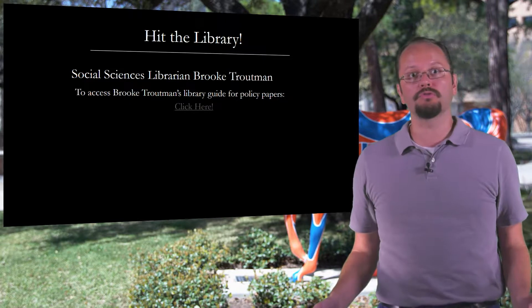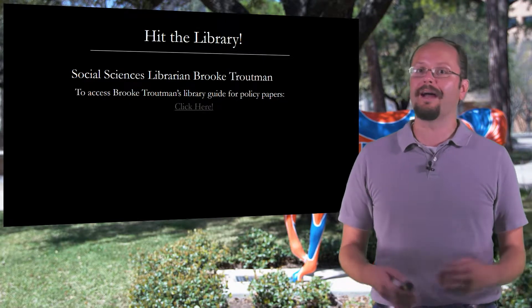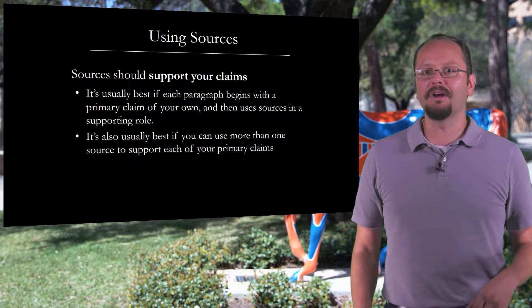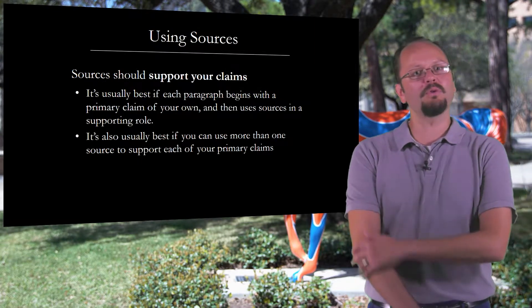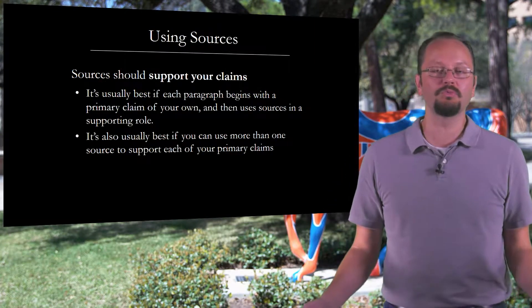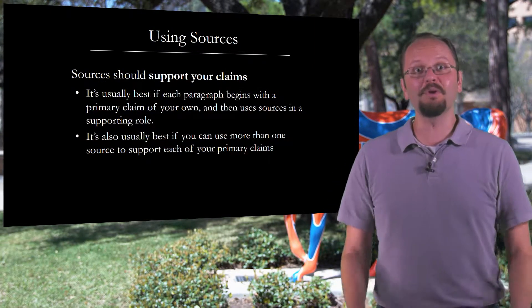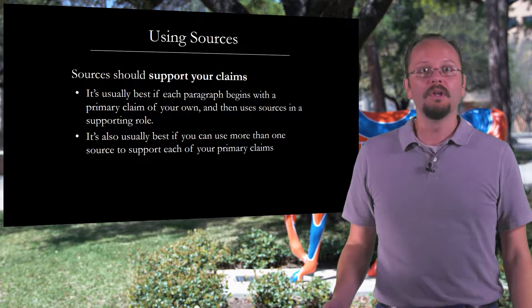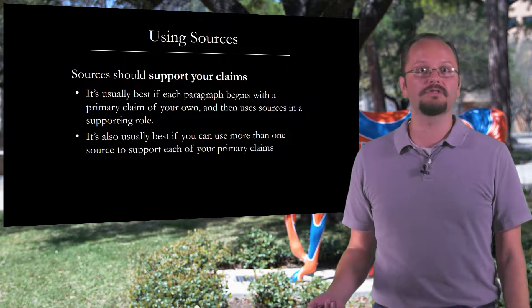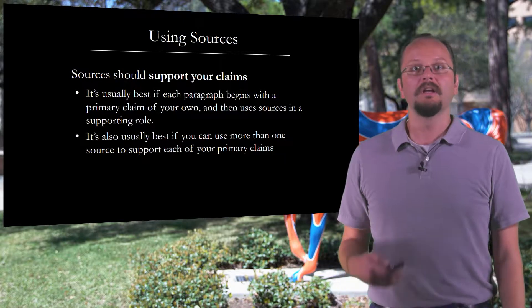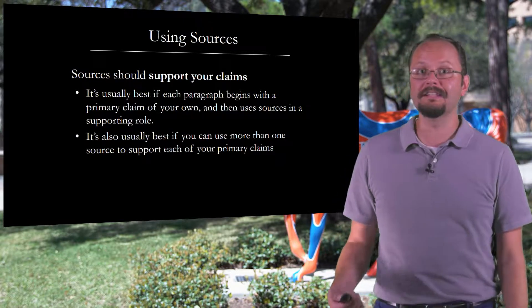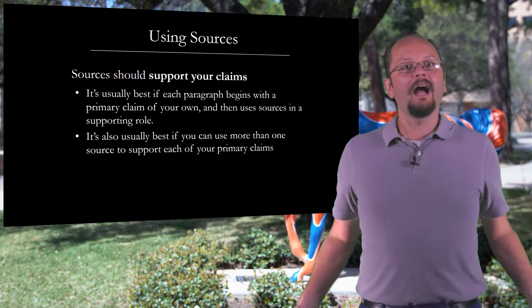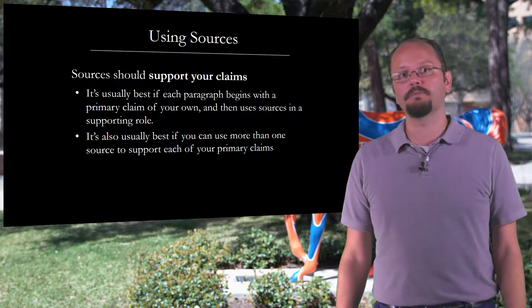Now that you have some sources in front of you and a sense of what sources are going to be useful, the question we often come up with is: how do I use those sources within my paper? I have a few recommendations to offer, and then in the next short video, I'll talk about how to use APA style to cite policy documents, since that's a little different from ordinary APA style. So how do we use sources in a policy analysis paper?